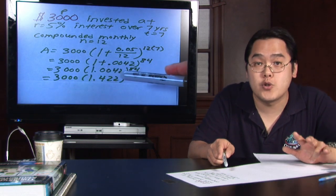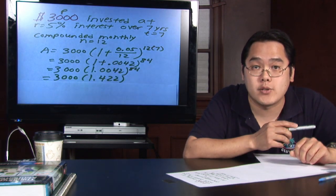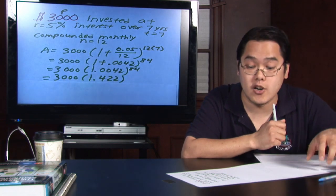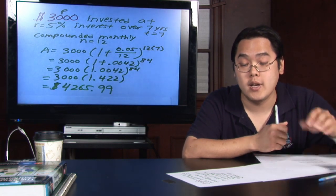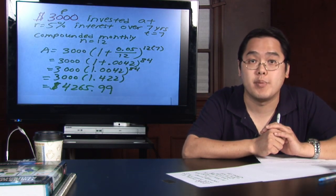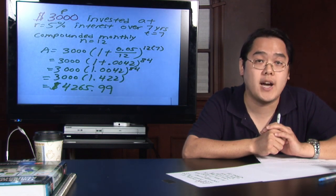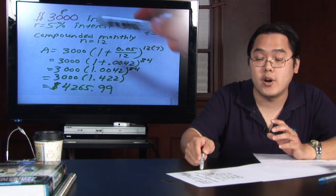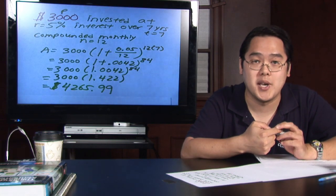Here's the moment of truth, because you have to multiply that with 3,000 to figure out how much money you'll have at the end of seven years, and you'll find out, if you plug in your numbers right, that it's going to be $4,265.99, which is quite a lot more than $3,000 that you had to begin with.